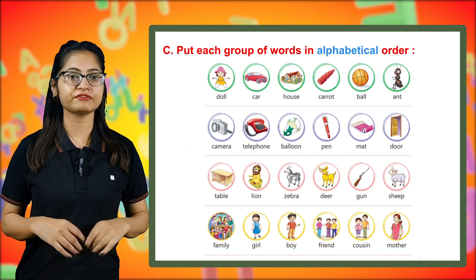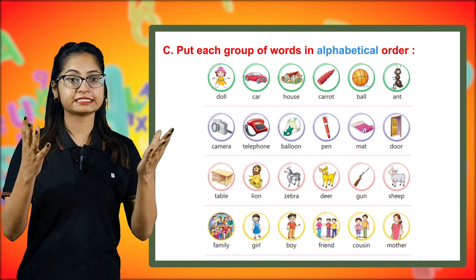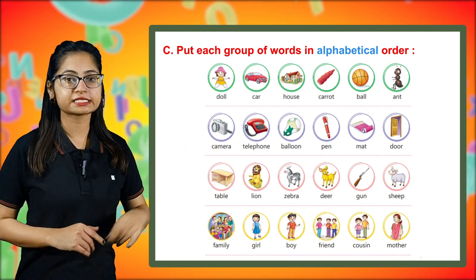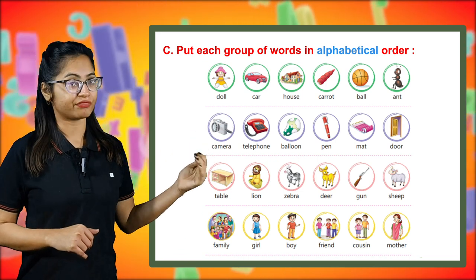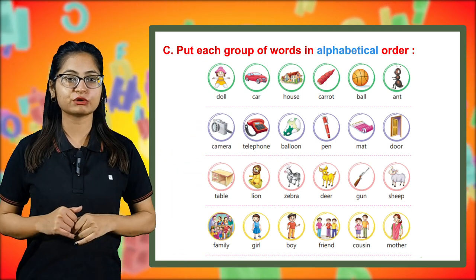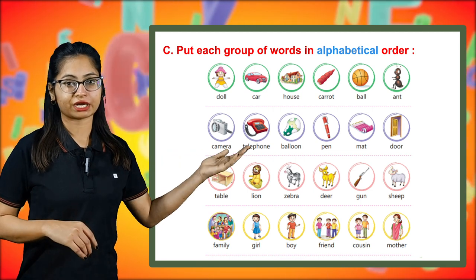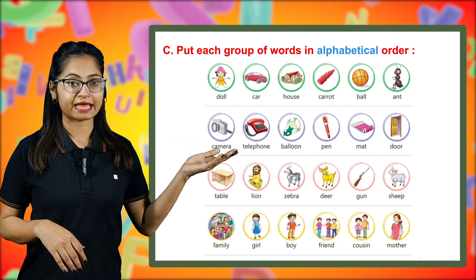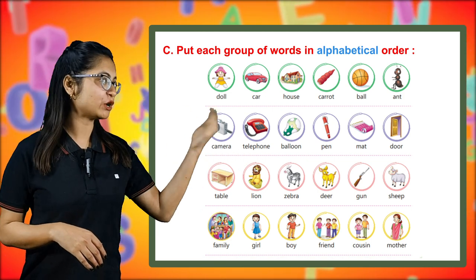The next group has camera, telephone, balloon, pen, mat, and door. Arranged in alphabetical order, it will go: balloon, camera, door, mat, pen, and then telephone.